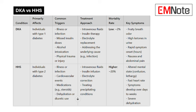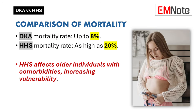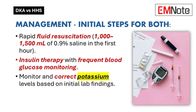Here's something surprising: you might think DKA, with its rapid onset and dramatic symptoms, would carry the higher mortality rate. But HHS actually has a higher mortality rate — sometimes as high as 20%, compared to up to 8% for DKA. This is likely because HHS often affects older individuals who already have other health conditions, making them more vulnerable. Also, those early signs of HHS can be easily missed or attributed to something else, leading to delays in diagnosis. By the time HHS is recognized, it can be much harder to manage.